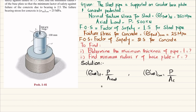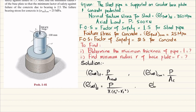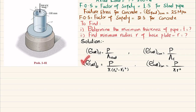The area of the steel pipe — a hollow pipe — equals π(r_outer² − r_inner²). And the allowable stress in concrete equals P divided by the area of the concrete base plate, which is πr². So we have the area formulas set up for both steel and concrete.